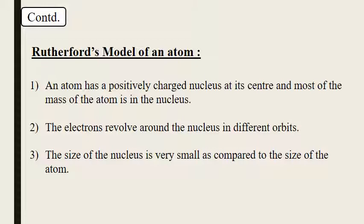Rutherford's model: an atom has a positively charged nucleus at its center, and most of the mass of the atom is in the nucleus. Electrons revolve around the nucleus in different orbits. The size of the nucleus is small as compared to the size of an atom. These were the conclusions or postulates of Rutherford's model of an atom.